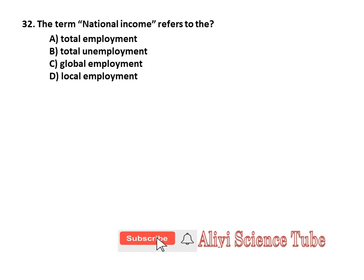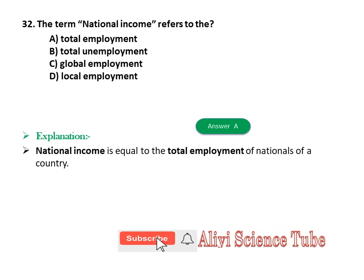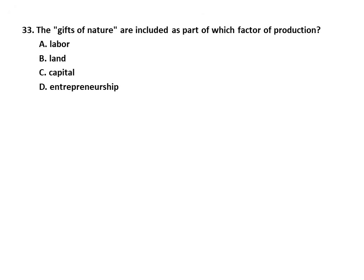Question thirty-two: The term national income refers to: A) Total employment, B) Total unemployment, C) Global employment, D) Local income. The answer is A, total employment. Question thirty-three: The gifts of nature are included as part of which factor of production? A) Labor, B) Land, C) Capital, D) Entrepreneurship. The answer is B, land — land refers to the natural resources and all free gifts of nature suitable in the production of goods and services.